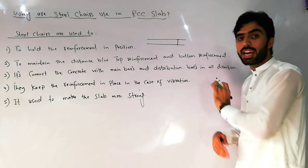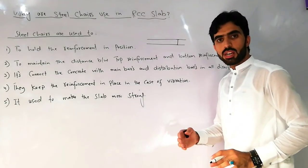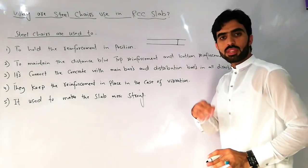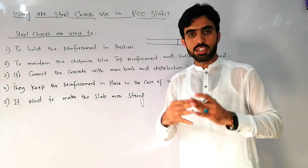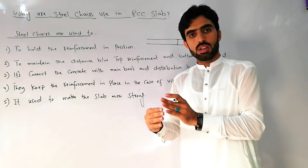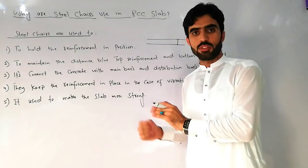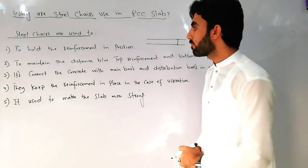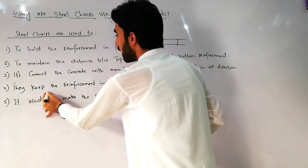The third reason is to connect the concrete with the main bars and distribution bars in all directions, because this makes it more strong. Steel chairs connect the concrete with reinforcement in all directions.